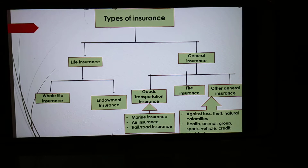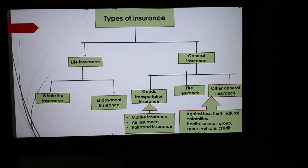The next type is endowment insurance. The contract in which the insurance company promises to pay the amount on maturity to the insurer, or to their heirs in case of death before maturity of the policy, is called endowment insurance. The insured has to pay a fixed premium at fixed intervals to the insurance company. Out of the two types of life insurance, endowment policy has become more popular.